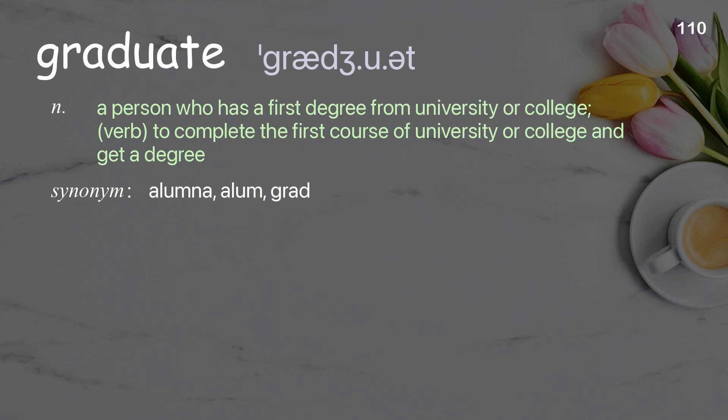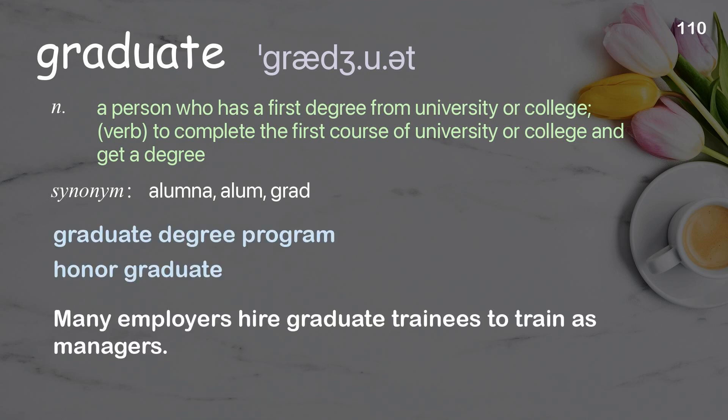Graduate: the person who has a first degree from university or college. Verb: to complete the first course of university or college and get a degree. Examples: graduate degree program, honor graduate. Many employers hire graduate trainees to train as managers.